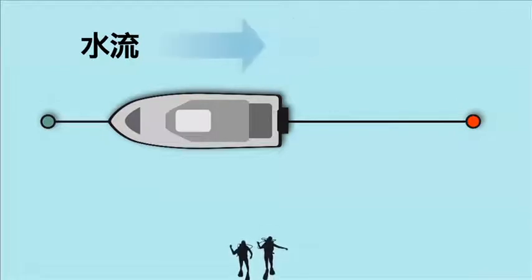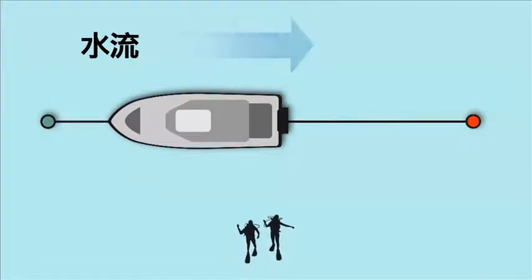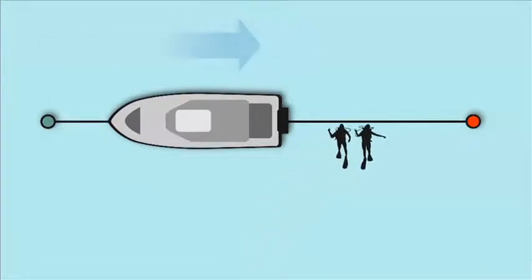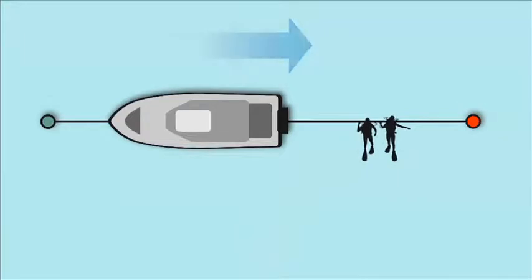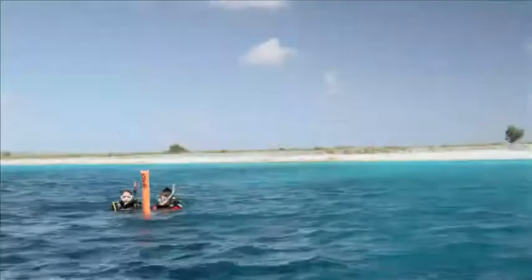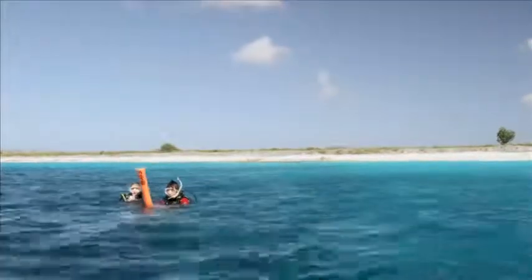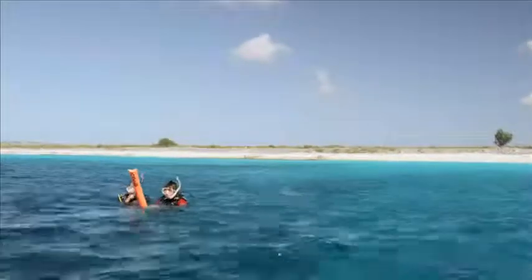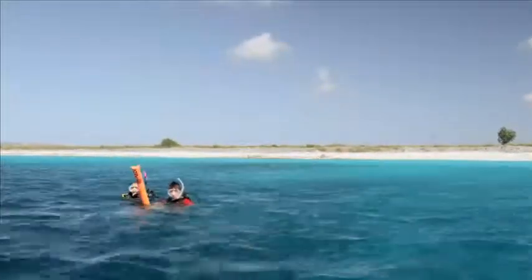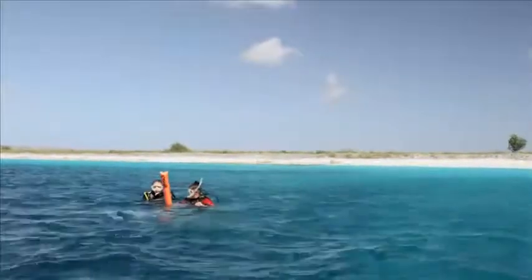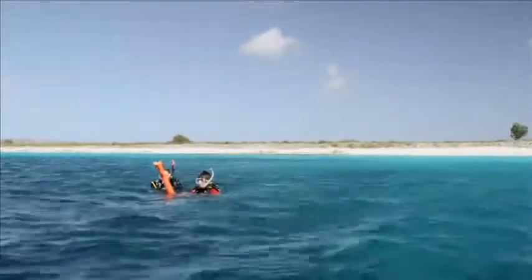视情况而定，你可以穿越水流，游到岸边，拉住潜水船尾的绳索，或游出水流。船潜时，如果因为水流而无法到达船边，要保持冷静。与潜伴呆在一起，将BCD充气，使用信号装置通知潜水船来接你。